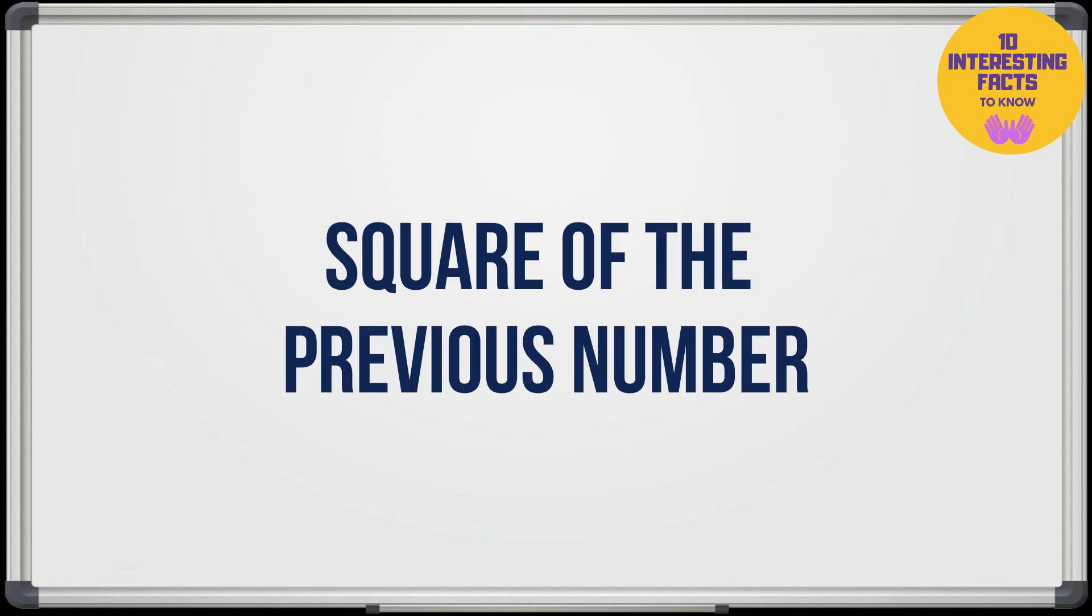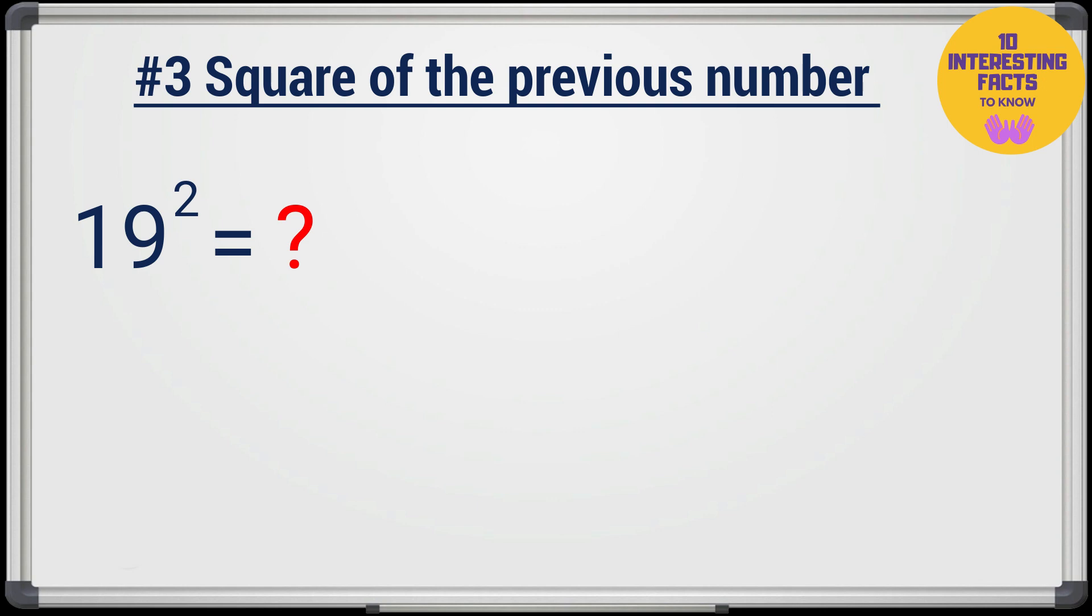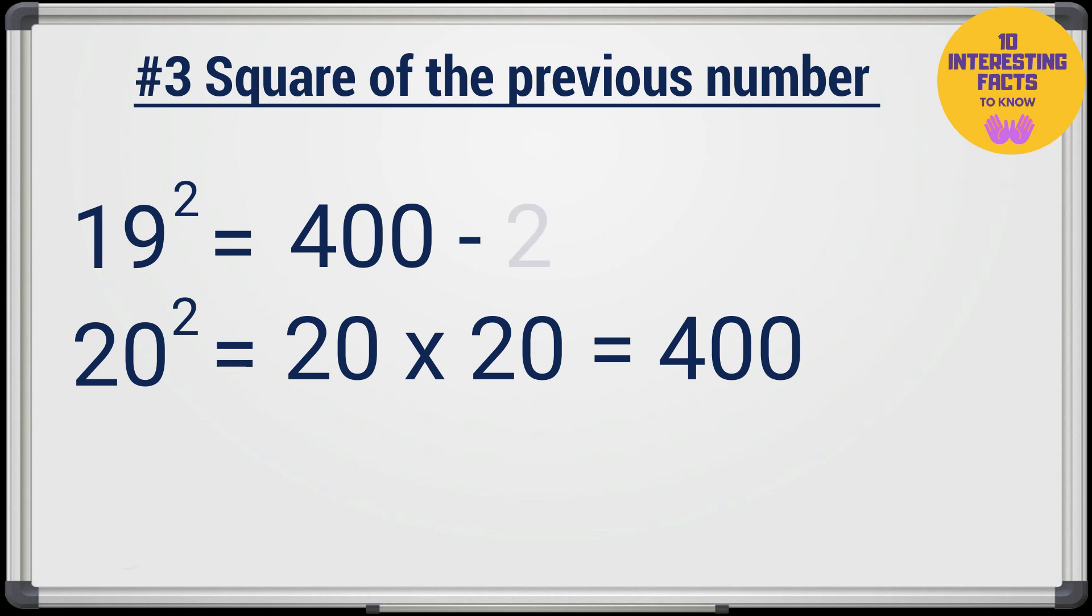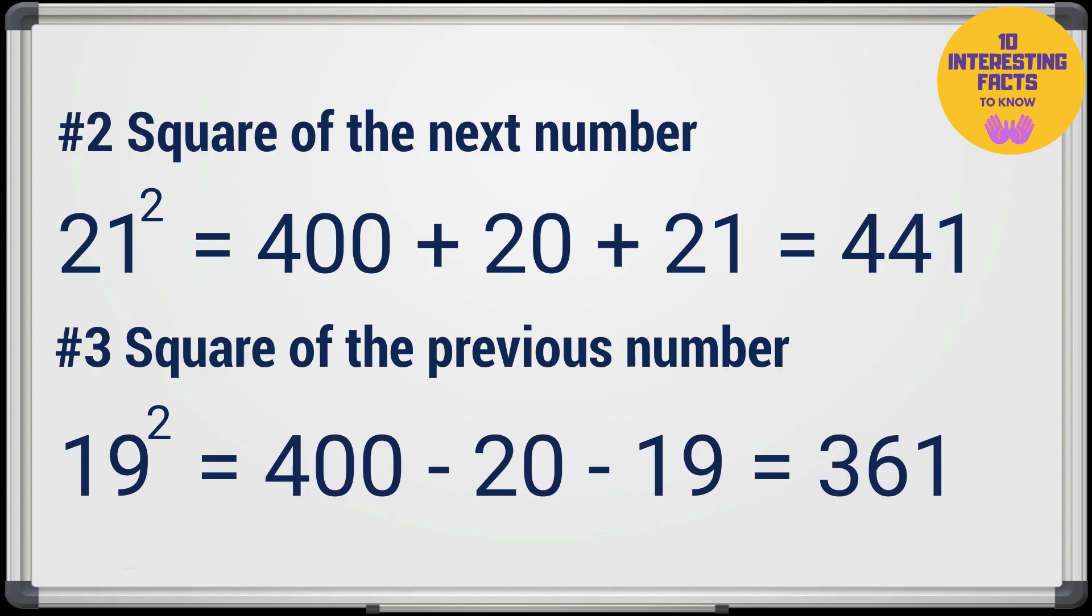Let's also learn to find the square of the previous number. Let's try 19, a number previous to 20. We know 20 square is 400. Now all we need to do is 400 minus 20 minus 19 which is 361. So the trick to remember is if you are finding the square of the next number you are adding the numbers to the square, and when finding the square of the previous number you are subtracting the numbers from the square.